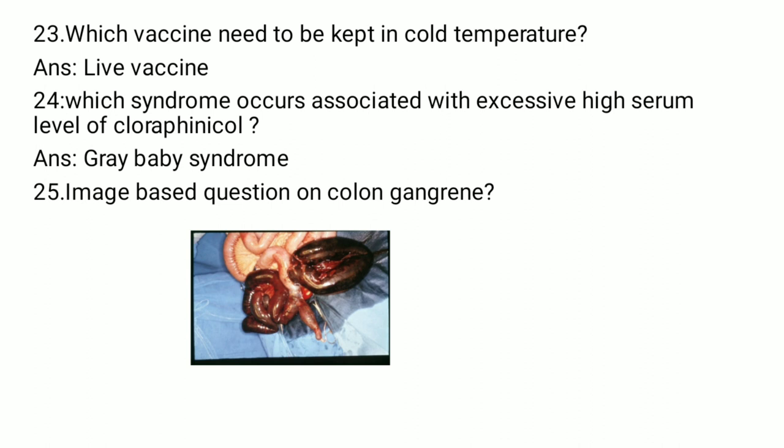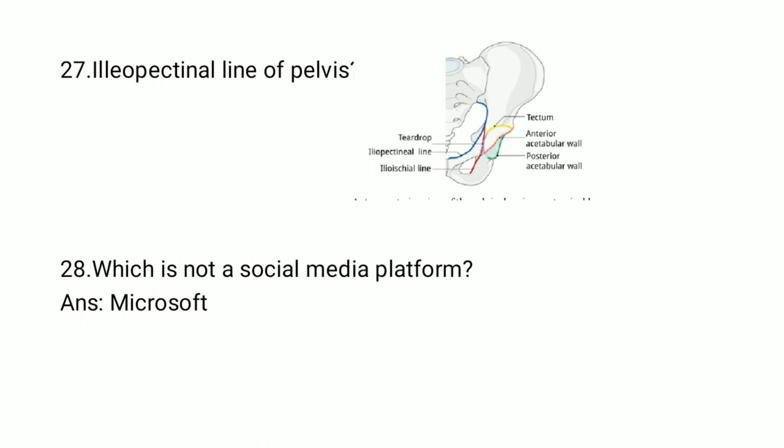The next image shows colon gangrene. Another image shows the ilio-pectineal line of the pelvis — you can see the blue line that denotes the ilio-pectineal line. This question is also image-based.